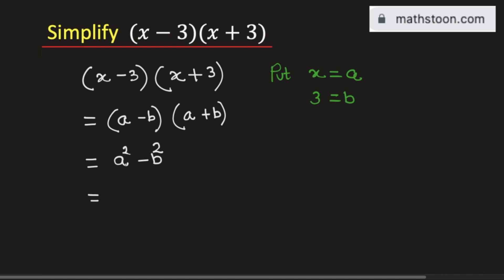And now we will put the values of a and b. So we get x square minus 3 square.